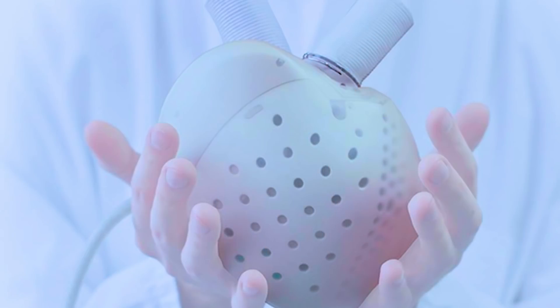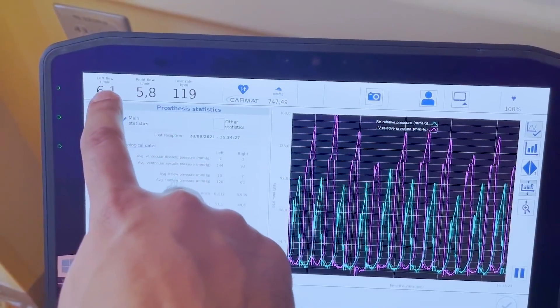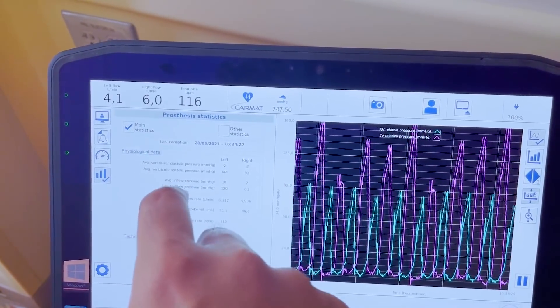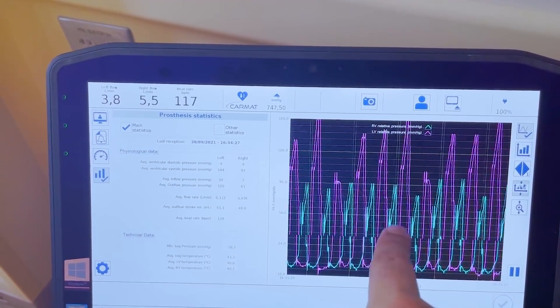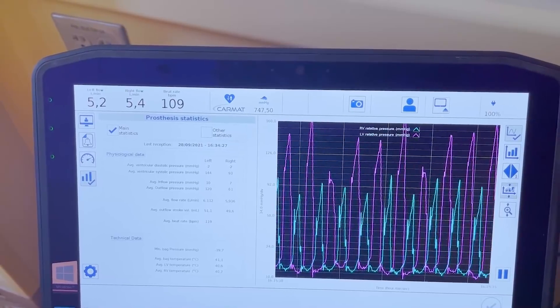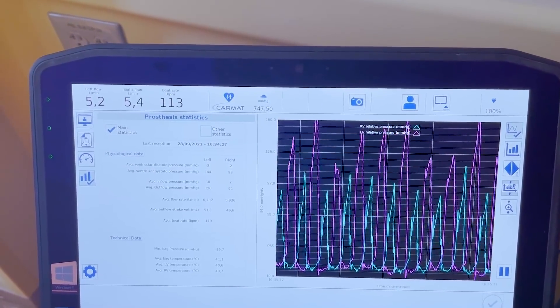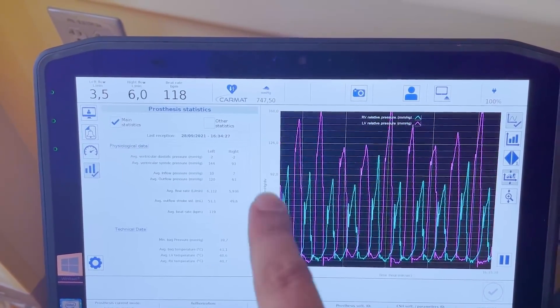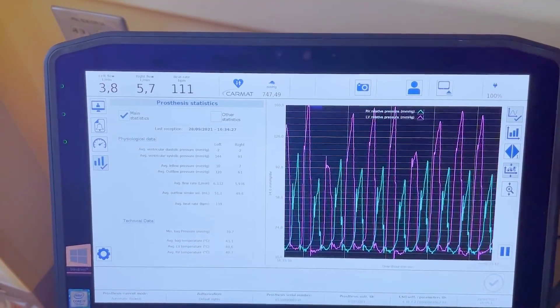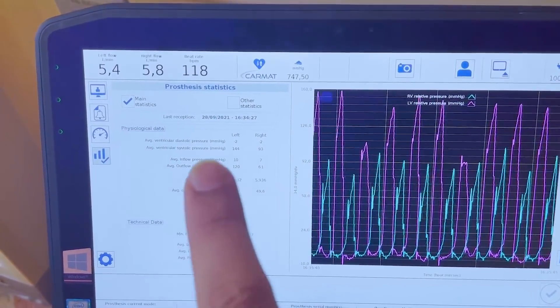Alright guys, this is the Total Artificial Heart. So you see LV flow and RV flow. This is going through the left ventricle, this is the right. See, the purple lines are the left ventricle, blue lines are the RV flow, and the heart rate is being decided based on the outflow from those parts.